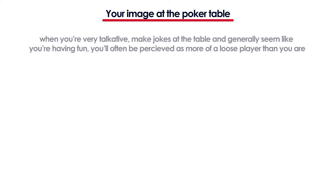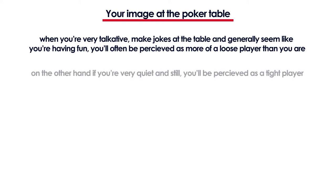Your table image is not only how you play but also how you act at the table. For example, when you're talking a lot, joking and having fun, you'll often be perceived as more of a loose player than you actually are. Whilst on the other hand, when you just sit quiet and don't move much, other players might make assumptions that you're a nit.